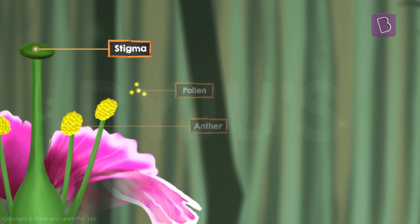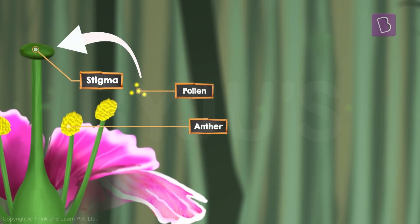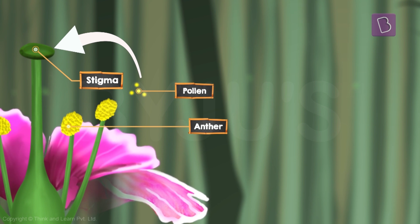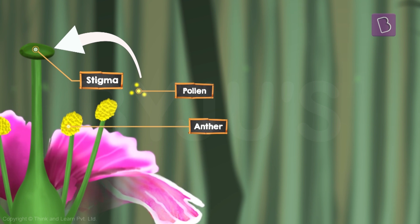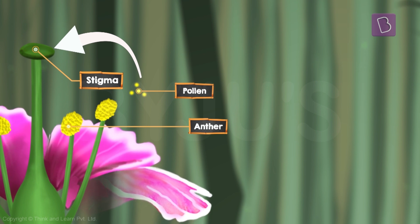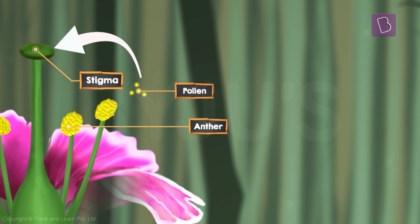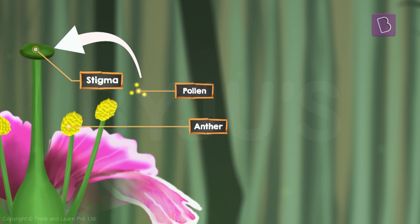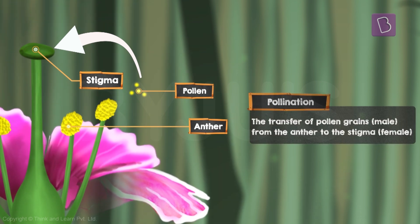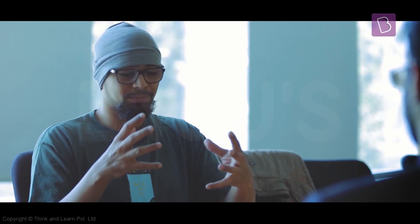The pollen needs to be sent from the anther towards the stigma for the plant to make seeds and fruits. These are the reproductive parts inside a plant that help make new plants. This process is called pollination.